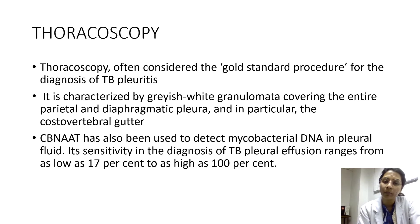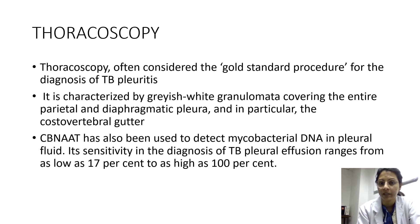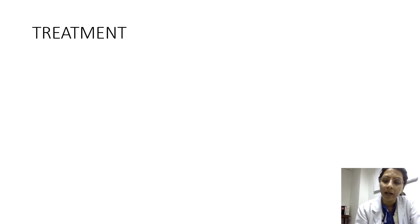CBNAAT has also been used to detect mycobacterial DNA in pleural fluid, with sensitivity ranging from 17% to 100%. Because TB pleural effusion is more of a hypersensitivity reaction, it is very difficult to demonstrate AFB by CBNAAT or culture. Therefore, the basic aim is clinical, radiological, and pathological correlation — highly suggestive clinical signs, unilateral effusion on radiology with septations and pleural thickening, high ADA, lymphocytic predominance, and ideally demonstration of granulomata on pleural biopsy.